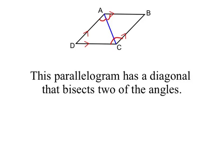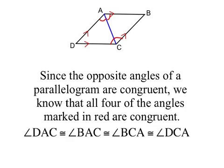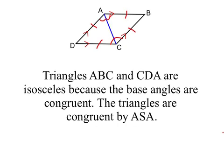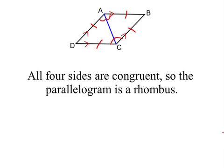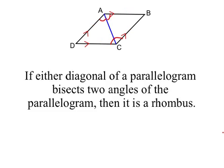Now we're given a parallelogram that has a diagonal that bisects two of the angles. Since the opposite angles of a parallelogram are congruent, all four of the angles marked in red are congruent — it's two congruent angles that are each bisected. Then those sides are congruent because two triangles are formed and they must be isosceles (if angles then sides), and the triangles are congruent by angle-side-angle. All four sides are congruent, so the parallelogram is a rhombus. We've just proven that if either diagonal of a parallelogram bisects two angles of the parallelogram, then it is a rhombus.